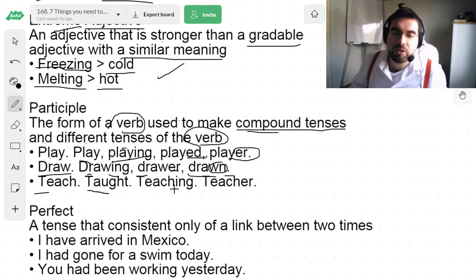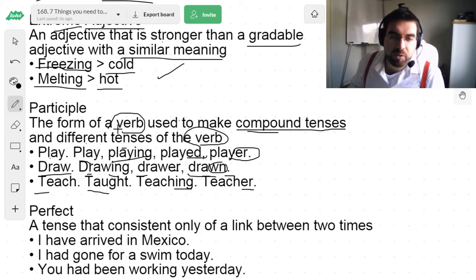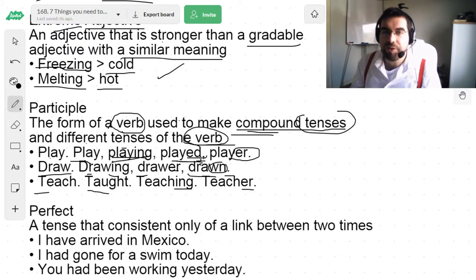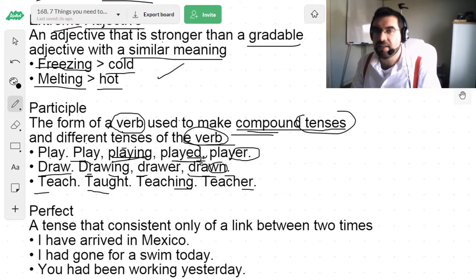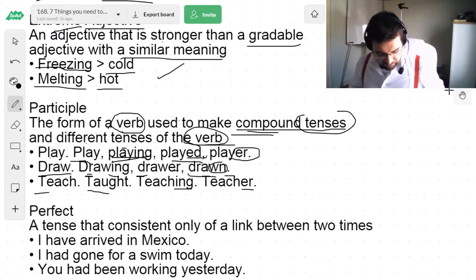Teach. Taught. Teaching. Teacher. So, a participle is the form of a verb used to make other tenses or compounds or other verbs. Like play, playing, played. Different verb. The same verb in different tenses. Quite important. Because it's quite subtle, that one is.